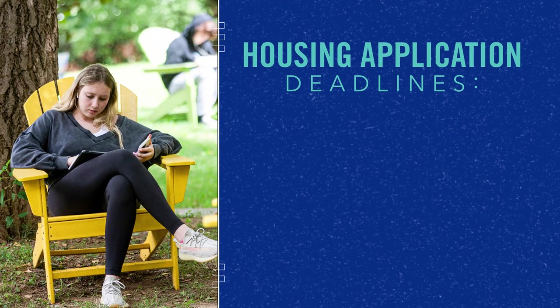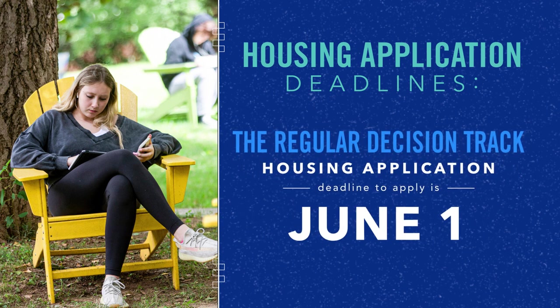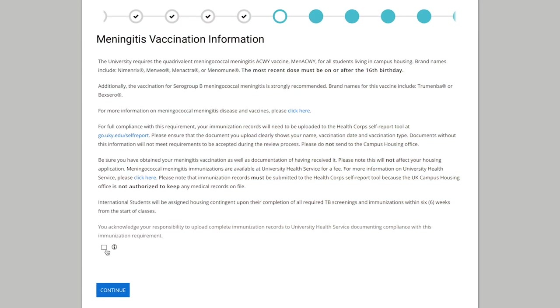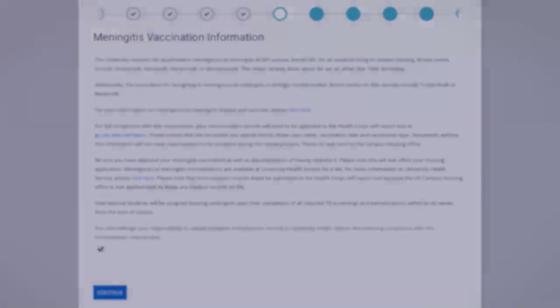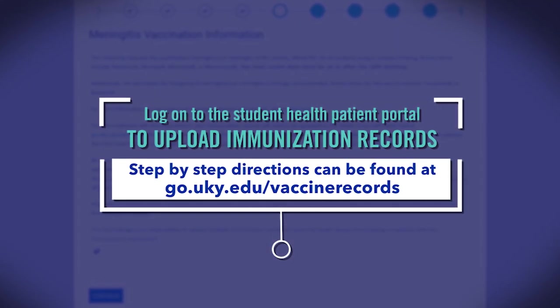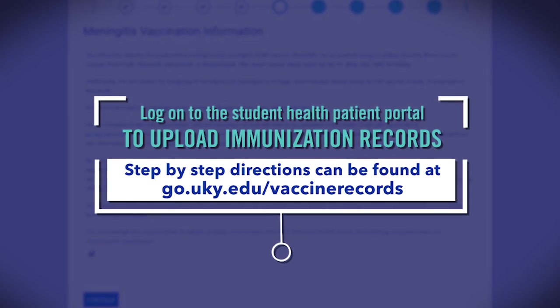Now's a good time to go over deadlines and other requirements. For new students, the Early Action Track deadline to apply for the Living Learning Program and to live in UK campus housing is February 15th. Check the campus housing website for all the important dates and deadlines. Additionally, the University of Kentucky requires you to have a meningitis vaccination to live on campus. Log on to the Student Health Patient Portal to upload immunization records. Please do not send these records to the UK campus housing office.